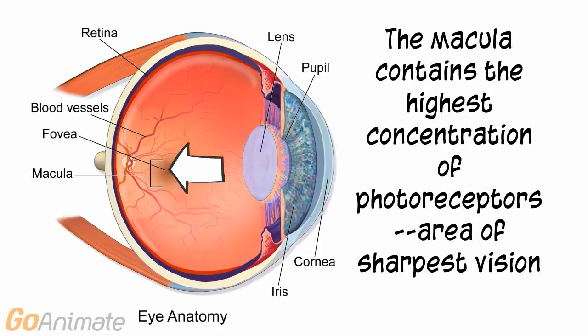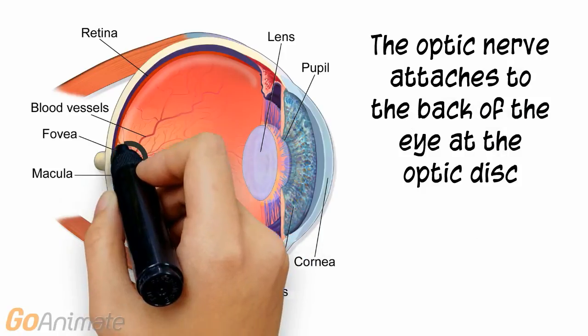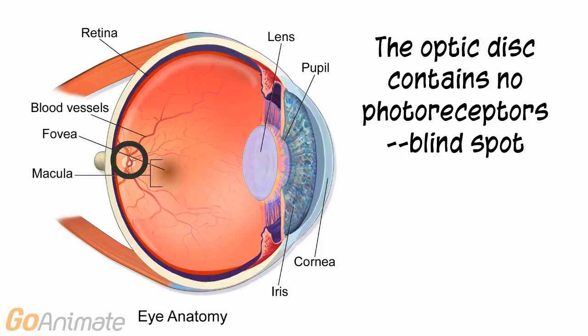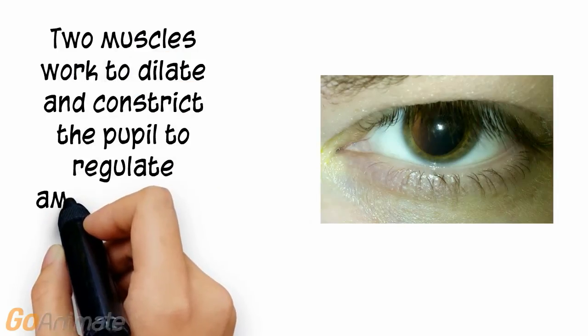Light passes through the aqueous humor, pupil, lens, and vitreous body, ending up on the retina at an area known as the fovea centralis. The fovea centralis contains a central area called the macula, which contains the largest concentration of photoreceptors — the area of sharpest vision. The optic nerve, cranial nerve 2, attaches at the back of the eye at an area called the optic disc.